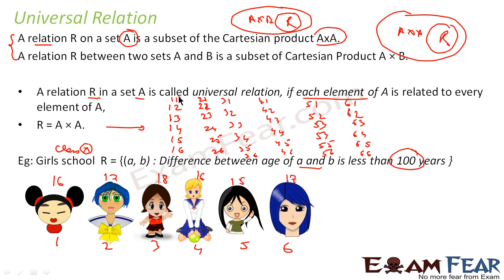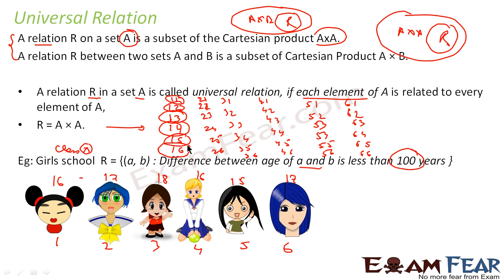For example: (1,1) difference is zero; (1,2) difference is one year; (1,3) difference is 16 minus 18, two years; (1,4) is zero years; (1,5) is 15 and 16, one year; (1,6) 16 and 17 one year. All these values satisfy this relation.